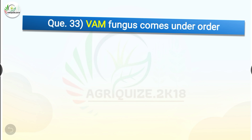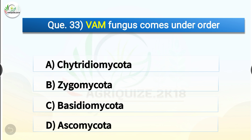Question number thirty-three: VAM fungus comes under order dash. The options are Chytridiomycota, Zygomycota, Basidiomycota, or Ascomycota. The correct answer is option B, Zygomycota. VAM fungus comes under order Zygomycota. Vesicular-arbuscular mycorrhiza is formed by the symbiotic association between certain Phycomycota and angiosperm roots.